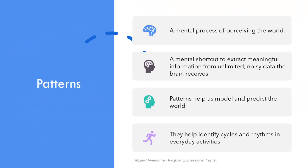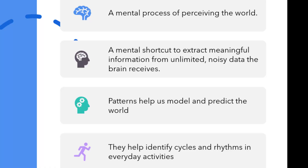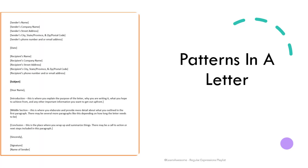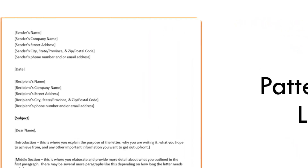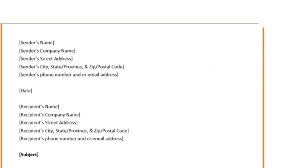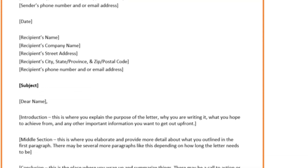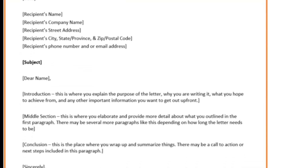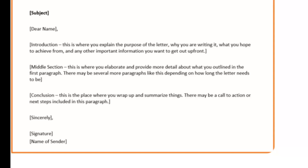Patterns are a mental shortcut our brain uses to process nearly unlimited data and make sense of new information without having to analyze every detail from scratch. They help us model the world, predict things, and identify cycles or the heartbeat of life. Consider an email or business letter — before you start reading it, if you have dealt with such letters before, you already know where the sender and receiver name and address are, where the main subject is, and where the action request is.